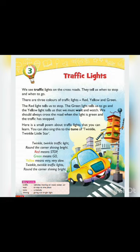Let's read the chapter. We see traffic lights on the crossroads. They tell us when to stop and when to go. There are three colors of traffic lights: red, yellow, and green. The red light tells us to stop.